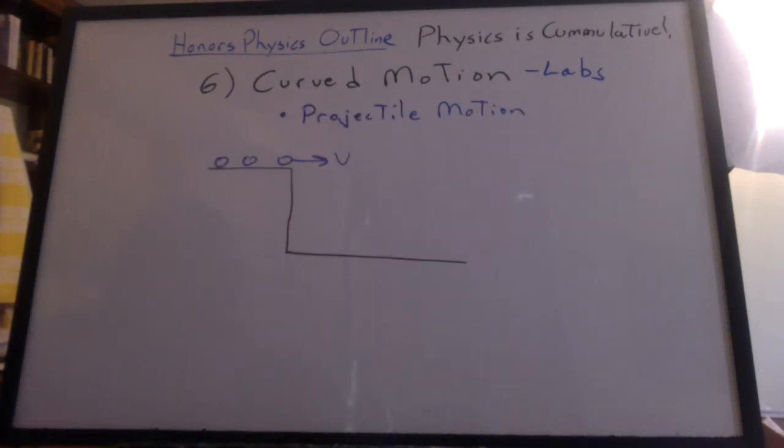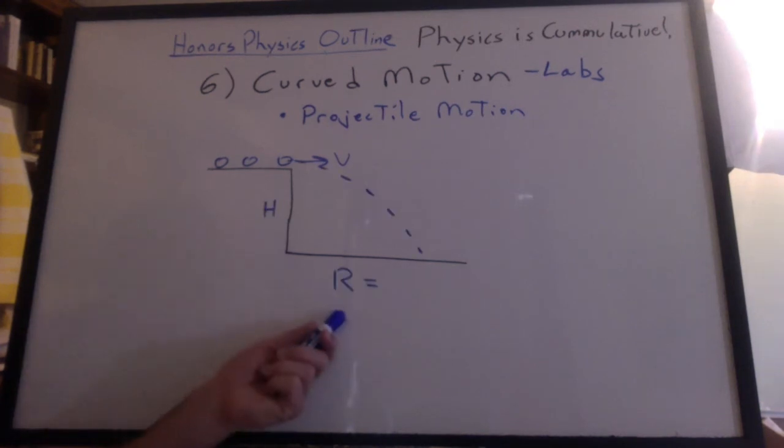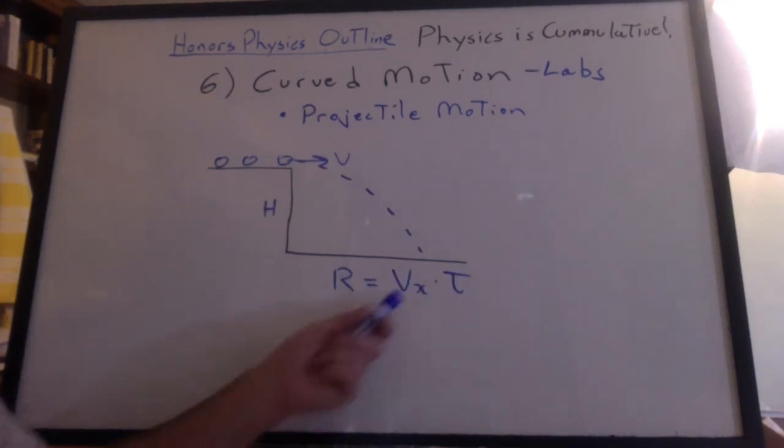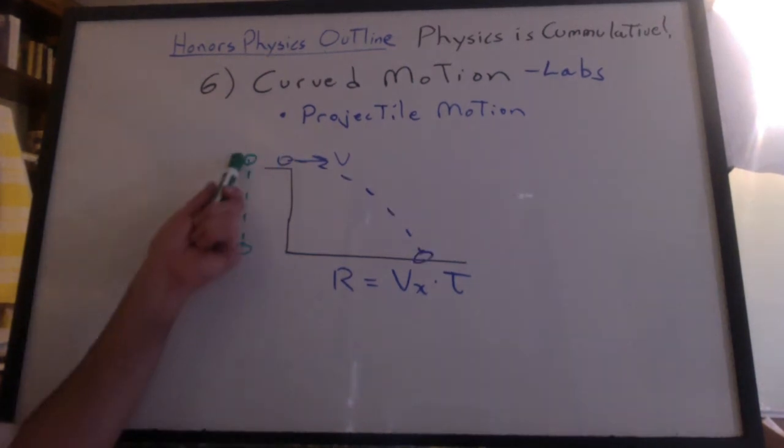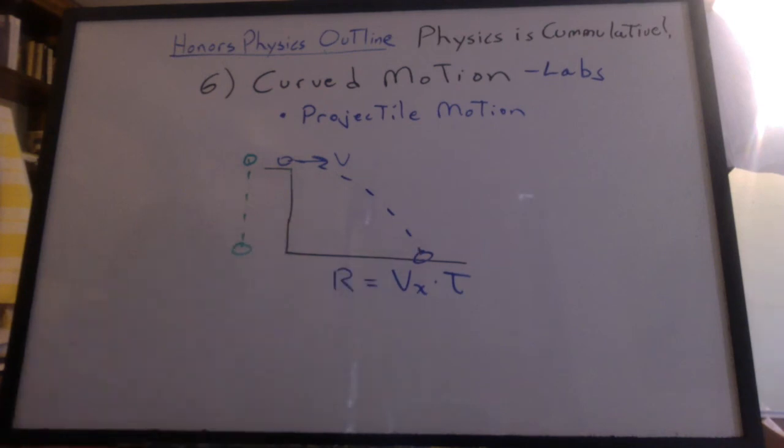We did the lab with the ball rolling off the table. We measured the height. We found the range. Kinematics formulas. There was vertical acceleration. There's no horizontal acceleration. We found that a ball dropped vertically and a ball shot sideways hit the ground at the same time.